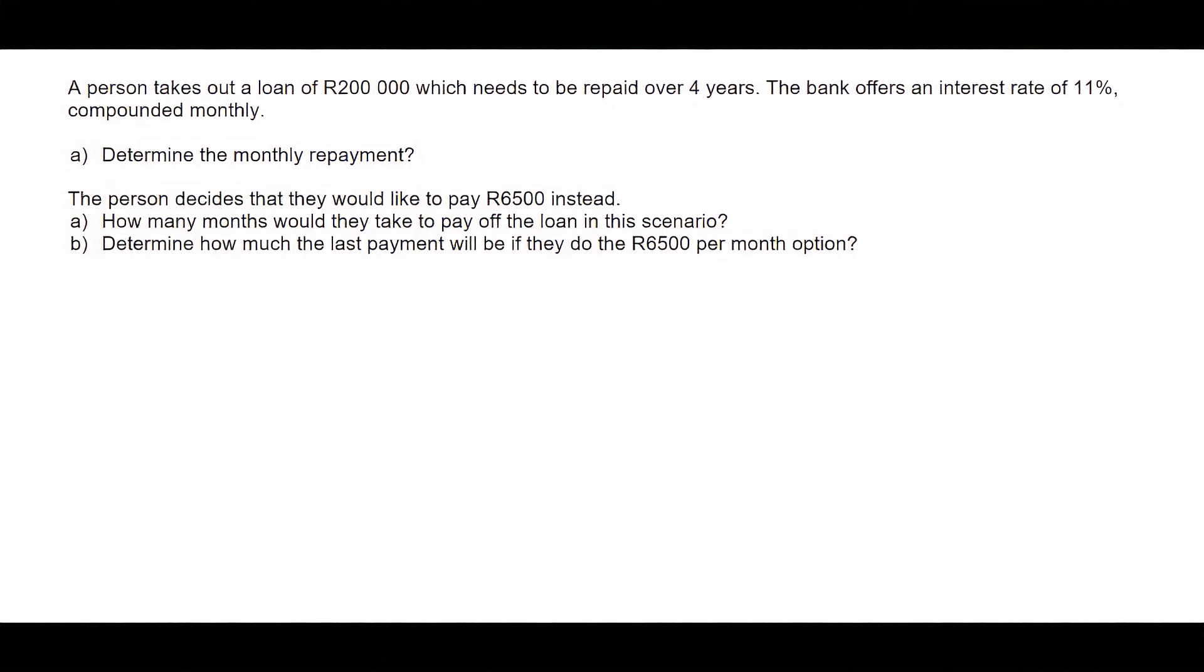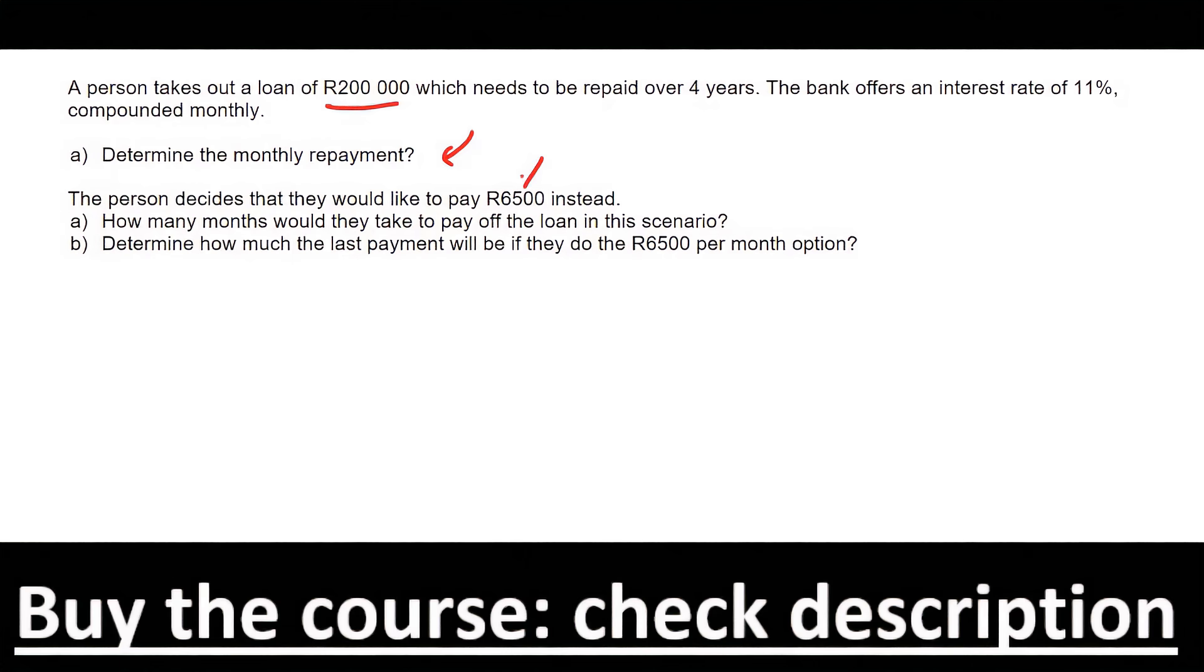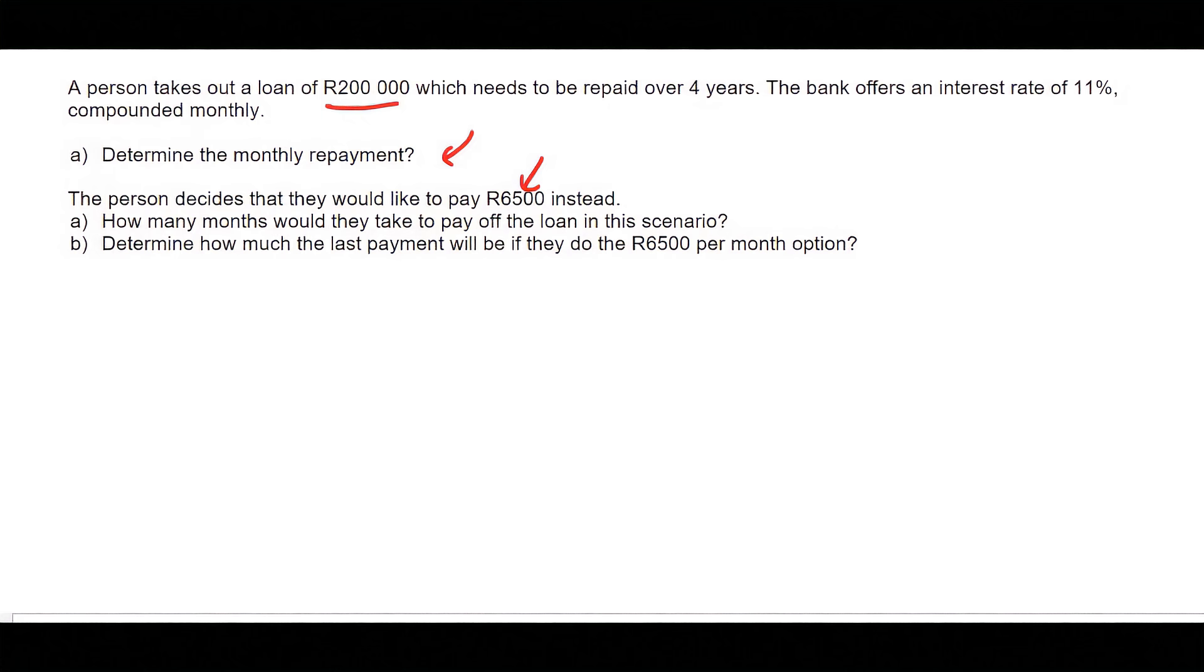In this lesson we're going to look at something quite interesting. We have a person who's going to take out a loan of 200,000 Rand, and we're going to determine their monthly payment. The person is actually going to decide to pay a different amount. I have seen them ask this in grade 12 final exams, so it's a very good question to understand.